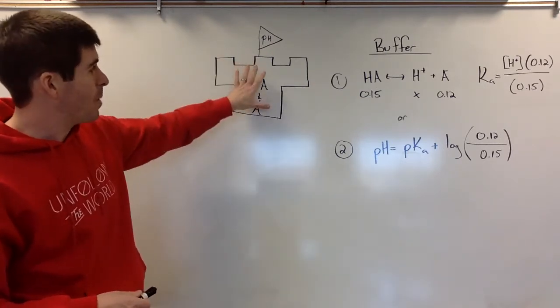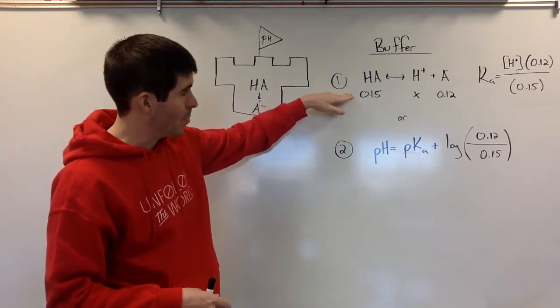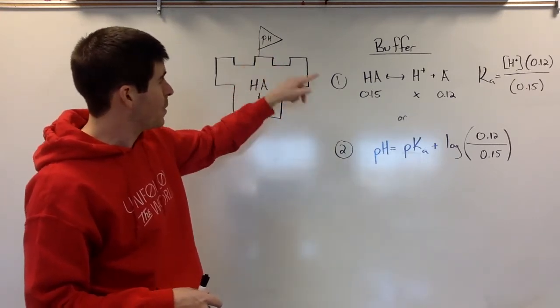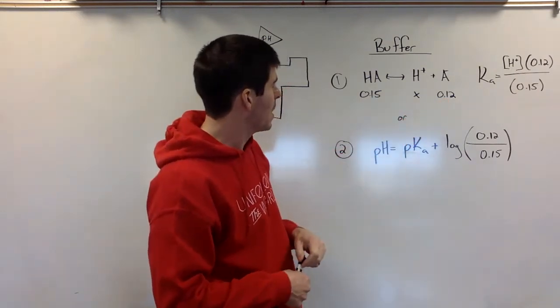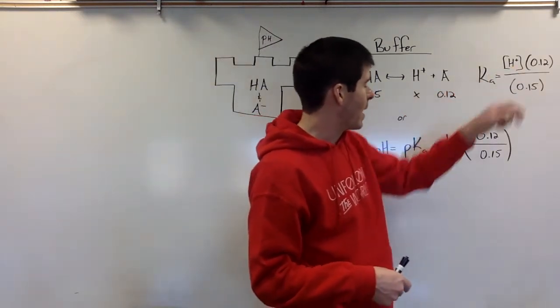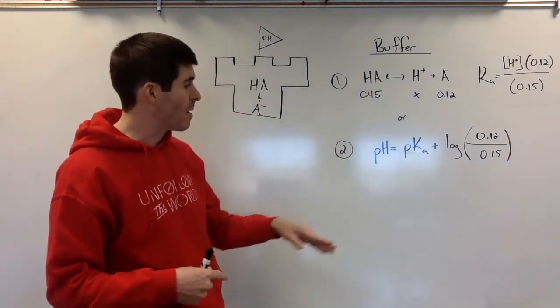If we had a buffer all by itself, this is a normal common ion problem. We can solve and figure out what that pH is if we knew the molarities, which I just made these up. We could use the K expression to find the hydrogen. Or a lot easier here, if we know we have a buffer,